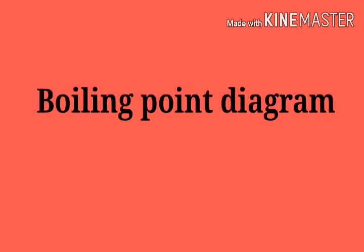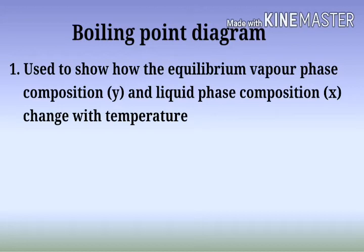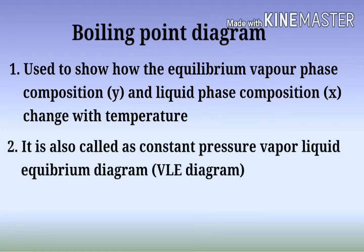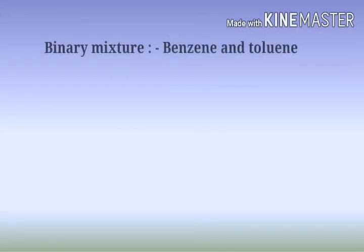Today's topic is the Boiling Point Diagram. In distillation, the Boiling Point Diagram is used to show how the equilibrium vapour phase composition Y and the liquid phase composition X change with temperature. It is also called the Constant Pressure Vapour Liquid Equilibrium Diagram, i.e., VLE.